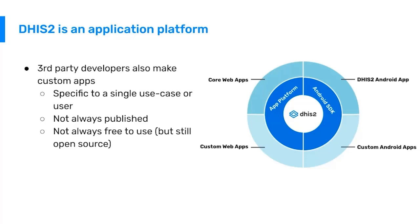Some third-party applications may have additional add-on services with costs, for example hosting. So while the core of DHIS2 — those 30 generic applications — are publicly available, free to use for anyone, and maintained over time, the third-party applications may not be. Many are, but some are not, and they have different ways in which they secure funding and resources to maintain the apps over time.